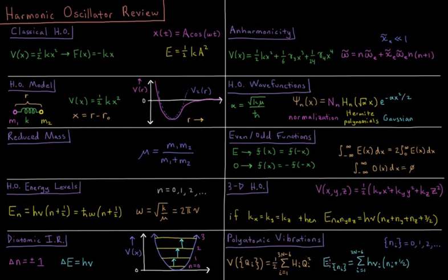The energy is a sum over all these normal modes, 3n minus 6 of them for a non-linear molecule with n atoms of h times each individual frequency times each individual quantum number plus one-half.